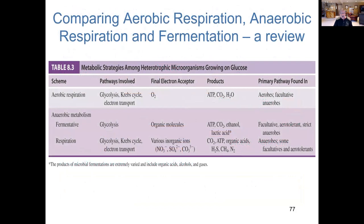This table takes a look at the three metabolic strategies that heterotrophic microbes utilize as they assimilate glucose — very similar to the first figure shown at the beginning of this lecture. Here we're looking at what pathways are involved, what the final electron acceptors are, what products are made, and some descriptive terms for the types of prokaryotes that can undergo these various processes. It would be worth taking time to look at this table in conjunction with the previous figure comparing all three at once.